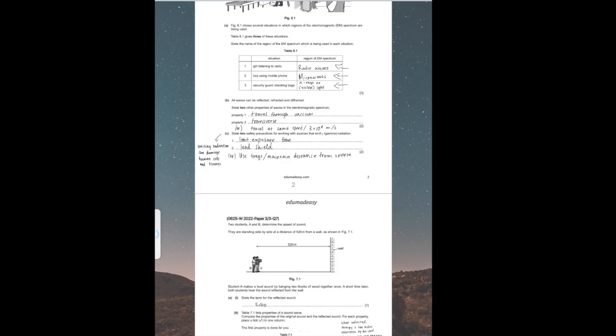That speed is 3 × 10⁸ meters per second for IGCSE purposes. Part C states: state two safety precautions for working with sources that emit gamma radiation. The first one is to limit exposure time. The second one is to encase the objects with gamma radiation in a lead shield, or to use tongs and maintain a distance from the gamma radiation source.